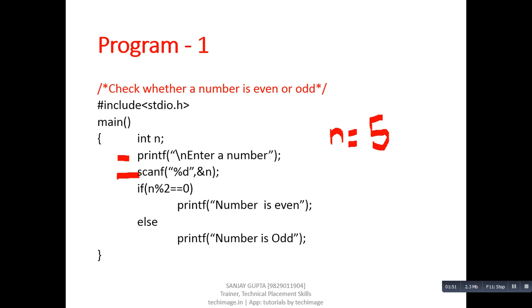Now the value of n is 5. If we put this value inside this if condition, it becomes 5 modulus 2. The modulus operator finds the remainder value, so 5 modulus 2 will be equal to 1. If we compare that 1 with the value 0, it becomes false.